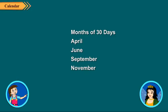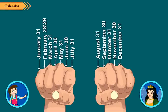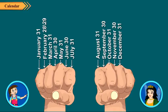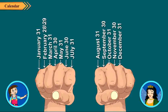Learn this method for remembering the number of days in each month. Hold your hands into a fist. Now go up and down counting on your knuckles. Start with January from the little finger of your left hand. All the knuckle months have 31 days.